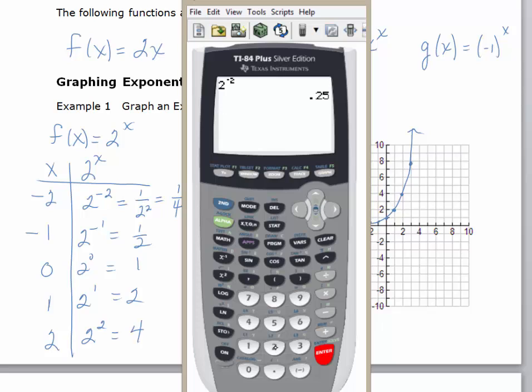And to do 2 to the negative 1, we do the same thing. We'll do 2, caret key, negative in parentheses, and the 1, and hit enter, and you get your decimal values. So, we're going to be using the calculator to evaluate more complicated exponential functions, but you should be able to graph a basic exponential function without a calculator.